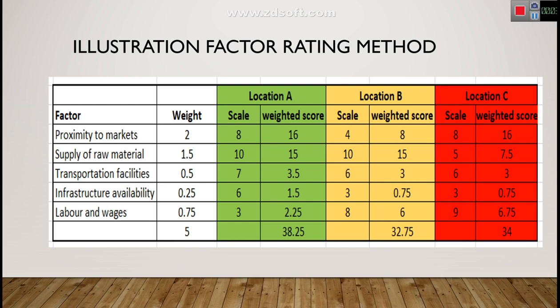To get the weighted score for Location A, we multiply each factor's weight by its score. Proximity to market: 2 × 8 = 16. Supply of raw materials: 1.5 × 10 = 15. Transportation facilities: 0.5 × 7 = 3.5. Infrastructure availability: 0.25 × 6 = 1.5. Labor and wages: 0.75 × 3 = 2.25. Summing all these weighted scores gives the total weighted score, which is the key decision element.